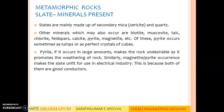Minerals present in slate: Slates are mainly made up of secondary mica and quartz. Other minerals which may also occur are biotite, muscovite, talc, chlorite, feldspars, calcite, pyrite, magnetite, etc. Pyrite occurs sometimes as lumps or as perfect crystals of cubes. Pyrite, if it occurs in large amounts, makes the rock undesirable as it promotes the weathering of the rock. Similarly, magnetite or pyrite occurrence makes the slate unfit for use in the electrical industry, because both of them are good conductors of current.